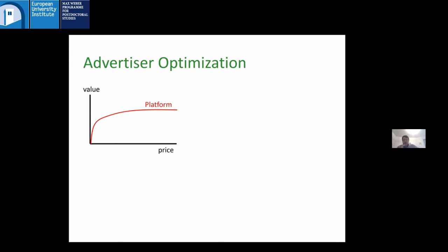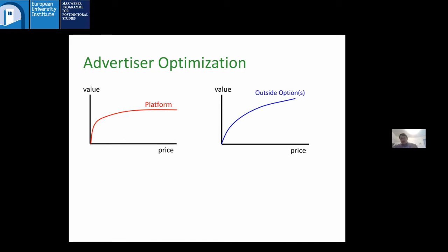A first approximation might be to say advertisers maximize value minus spend — take a quasi-linear model. But that leaves out an important part: this platform is not necessarily a monopolist. There are outside option values for spending money. Advertisers often have some operating budget set aside for advertising, and they're choosing to send some of it on this channel and some on another. From the perspective of something like Bing, it would be silly to model advertiser behavior without accounting for the fact that Google exists.